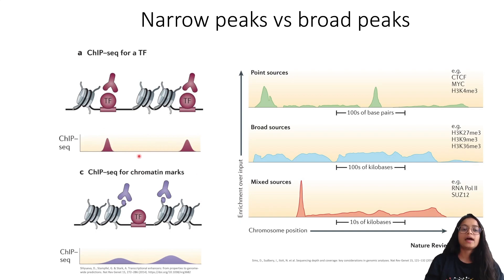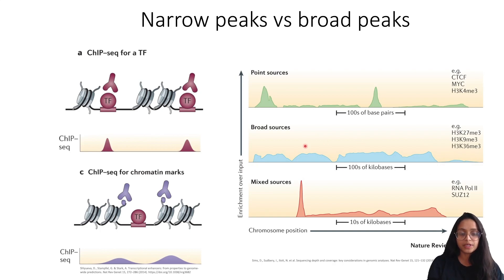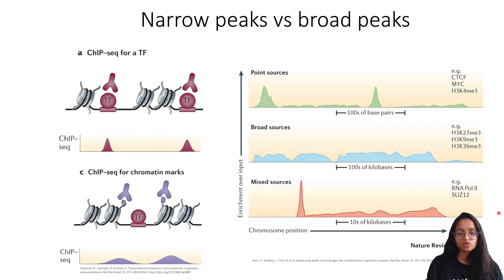ChIP-seq profiles differ depending on the type of protein or histone modification studied. For transcription factors, peaks are typically sharp and narrow. For chromatin marks or histone modifications, peaks encompass a larger genomic region, producing broader peaks. Some proteins exhibit a mixture of both profiles — for example, RNA Polymerase II can have narrow or broad peaks depending on whether it's detecting transcription initiation at the transcription start site or propagation along the gene body.